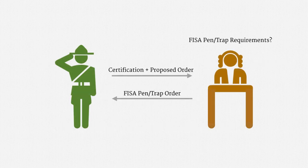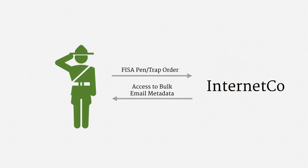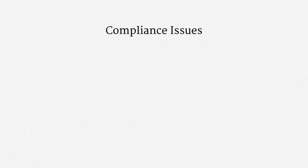Periodically, the NSA got a Pen Trap order for each internet backbone provider involved in the program. It served those orders on the internet services, and they allowed the NSA to access bulk email metadata — specifically, to attach hardware interception devices to their networks, and the NSA could remotely configure those devices as necessary. The program had a rocky history of compliance issues. In this context, 'compliance issue' is the NSA euphemism for violating a court order.